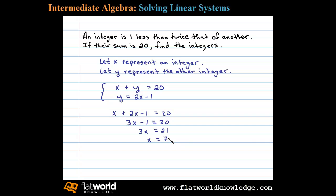Now all that's left to do is back substitute to determine what the other integer is. We'll plug X equals 7 into this second equation, and we have Y equals 2 times 7 minus 1, or 14 minus 1, which equals 13. So we found the second integer to be 13.